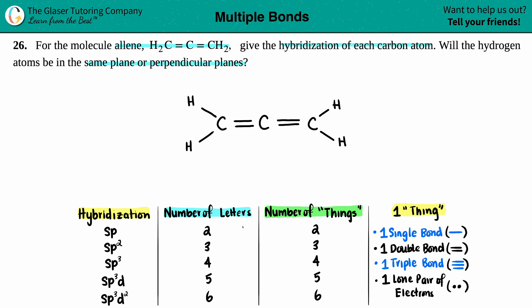And the number of letters corresponds with the number of things. So, two letters, two things, three letters, three things, et cetera. And just know that one thing is either one single bond, one double bond. So even though it's two lines, it's still classified as one thing, one triple bond, and one lone pair. So let's just go from left to right. Let's just find out what the hybridization of this carbon is.